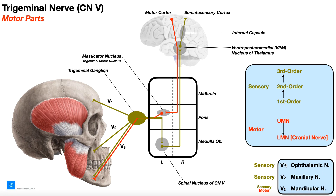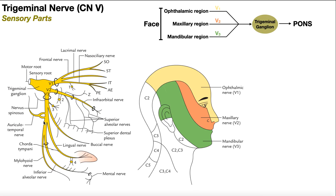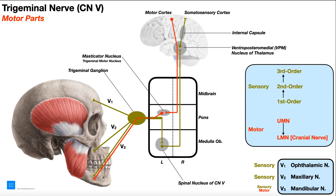V1 and V2 are both sensory only — they have no motor function. But V3, the mandibular nerve, has both sensory and motor function. For more detail, go back to the previous video on the sensory components. When we looked at the figure for V3, I mentioned the nerve to mylohyoid, or mylohyoid nerve. All the other V3 branches are sensory only, but the mylohyoid nerve is motor — it innervates the mylohyoid muscle and the anterior belly of the digastric muscle.